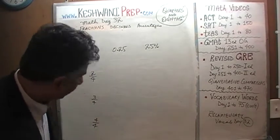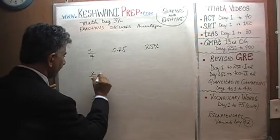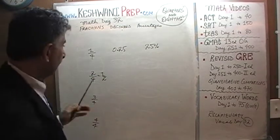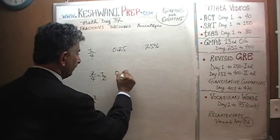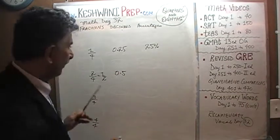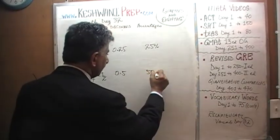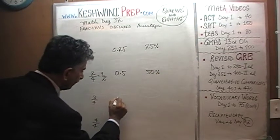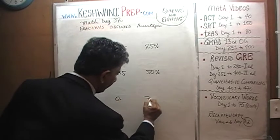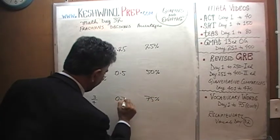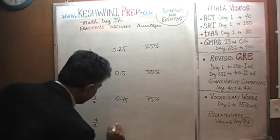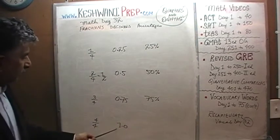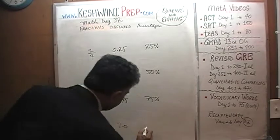Two quarters, of course, reduces to half, which is 0.5 — that's 50 percent. Similarly, three quarters is 75 percent, which is the same as 0.75. And four quarters is just one — four over four is just one — which is 100 percent.